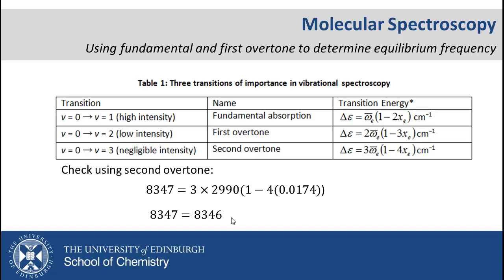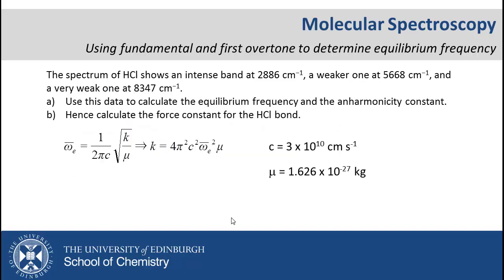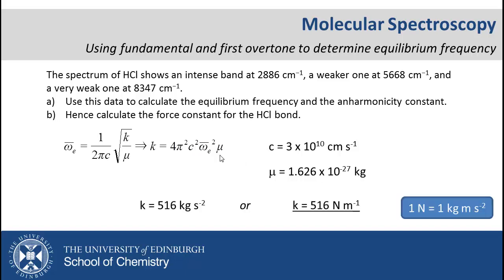To calculate the force constant, we just rearrange the expression for the oscillation frequency for k, and substituting in the values of the calculated oscillation frequency, the speed of light, and the reduced mass, we find a force constant of 516 newtons per meter. Note carefully here the units throughout.